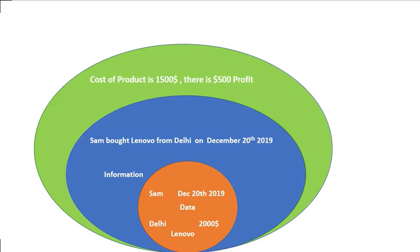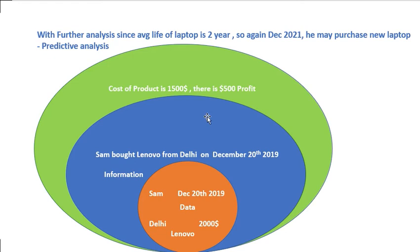Further analyzing: since the average life of a laptop is two years, again in December 2021 he may purchase a new laptop. This conclusion, based on customer behavior and our knowledge repository, is called predictive analysis — we can predict that in December 2021 he will again purchase a new laptop, so the business will be ready.